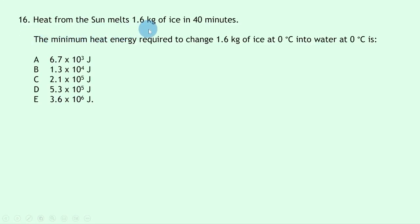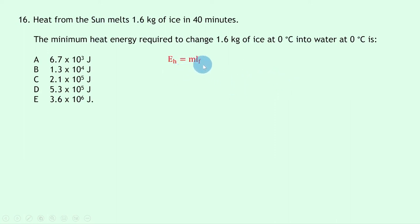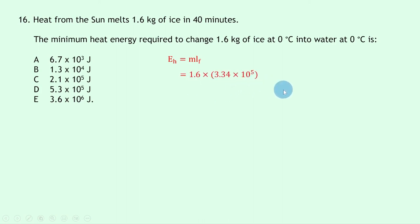Question 16: heat melts 1.6 kg of ice at 0°C into water at 0°C. This is a change of state at constant temperature, so we use Eh = mLf. Substituting: Eh = 1.6 × 3.34 × 10⁵ = 5.3 × 10⁵ joules. The latent heat of fusion of water comes from the datasheet. The answer is D.